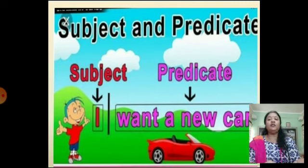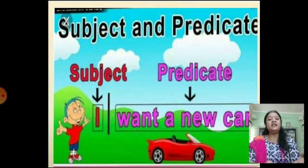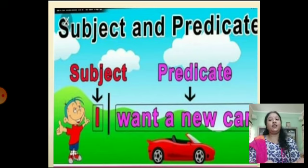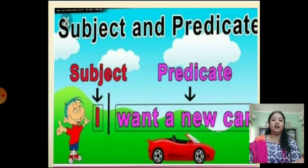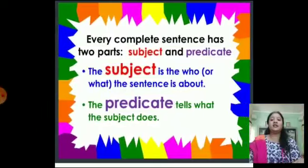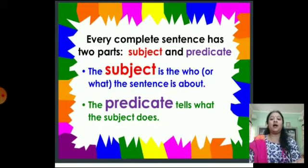Now we are going to talk about the parts of a sentence. The sentence is divided into two parts: the subject and the predicate. For example, in the sentence 'I want a new car,' the subject is 'I' and the predicate is 'want a new car.' Every complete sentence has two parts: subject and predicate.